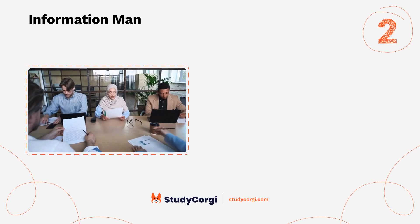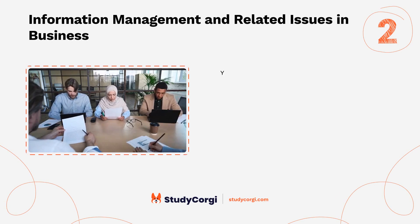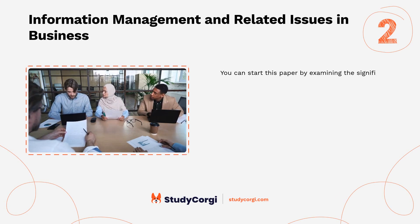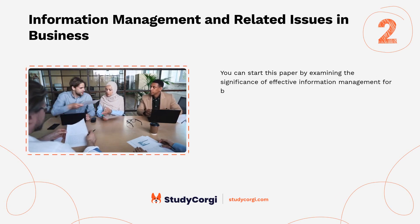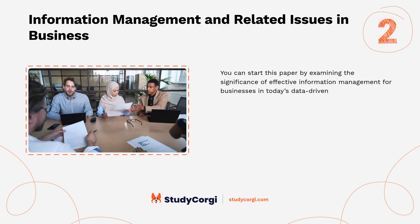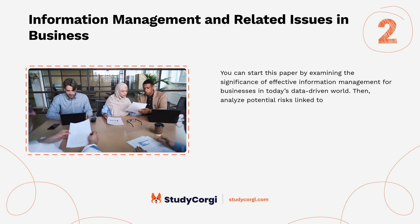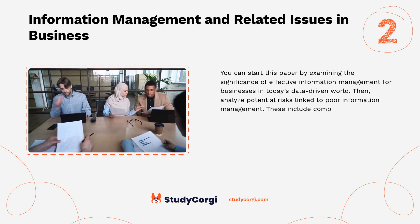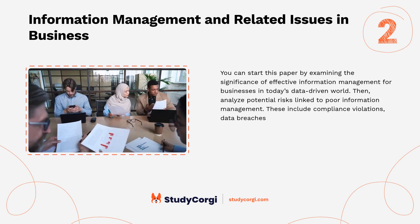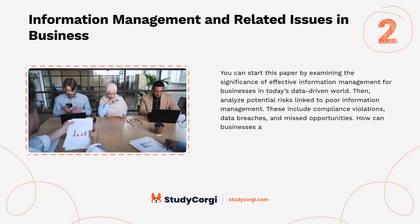Information management and related issues in business: you can start this paper by examining the significance of effective information management for businesses in today's data-driven world. Then analyze potential risks linked to poor information management — these include compliance violations, data breaches, and missed opportunities. How can businesses address these issues?